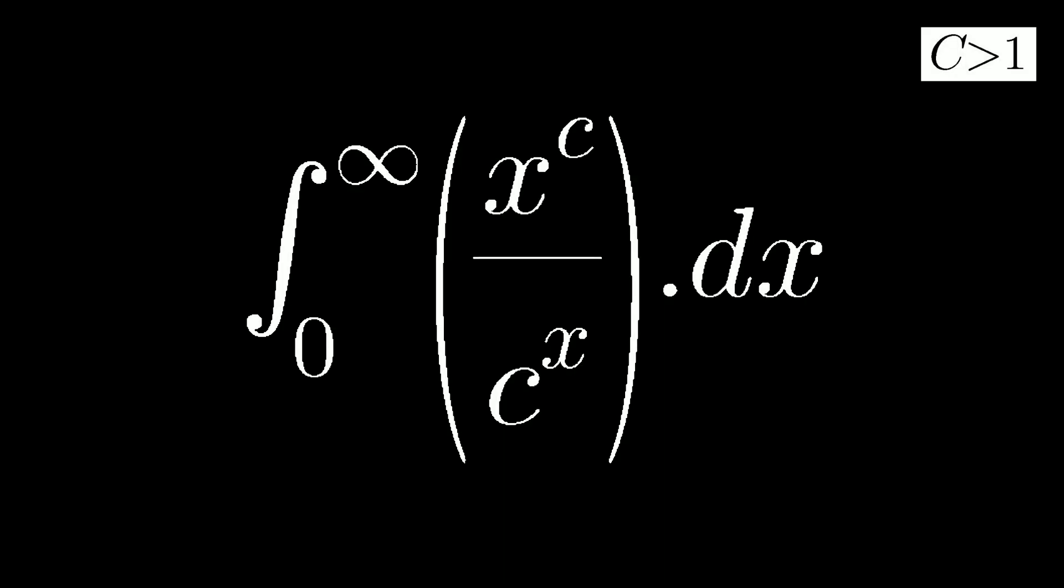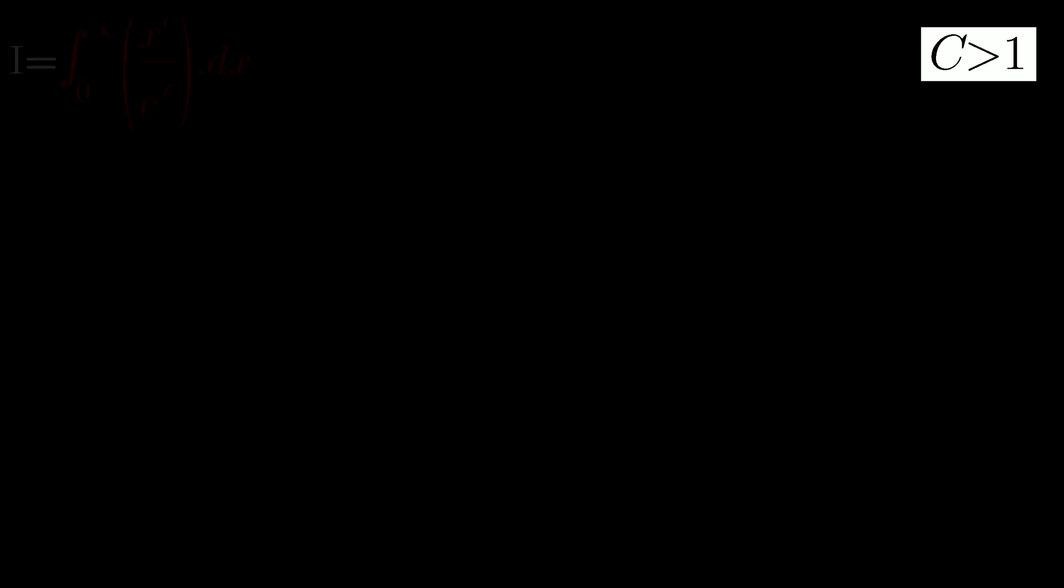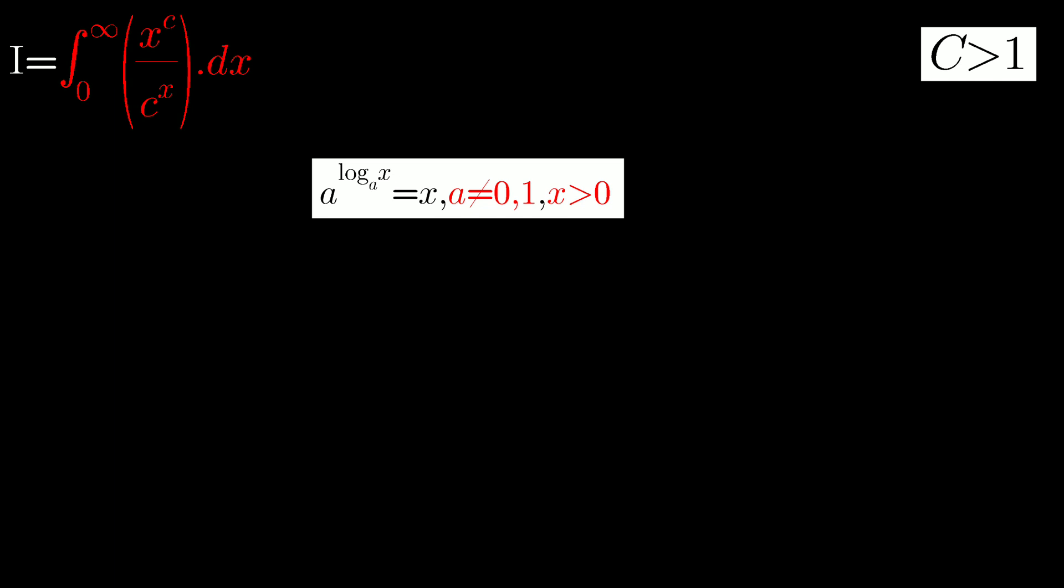Integration of x to the power c upon c to the power x, limit from 0 to infinity. We have, as we know, this result: a to the power log x equals x, where a cannot equal 0 or 1, and x greater than 0.